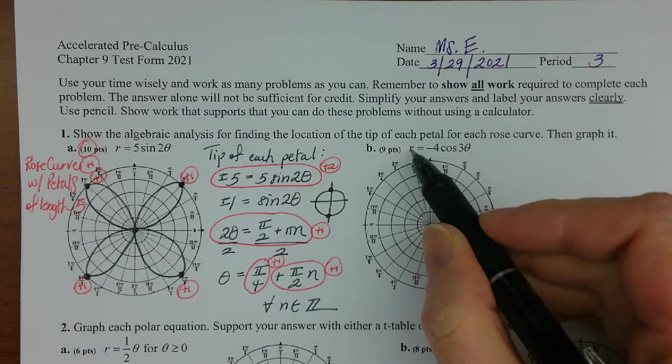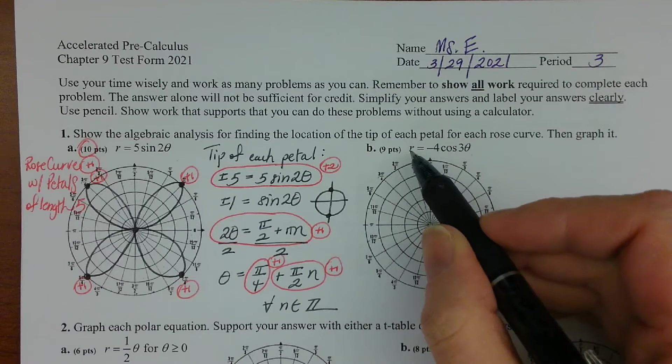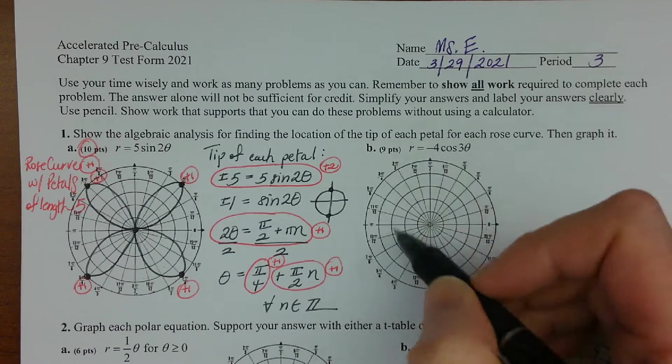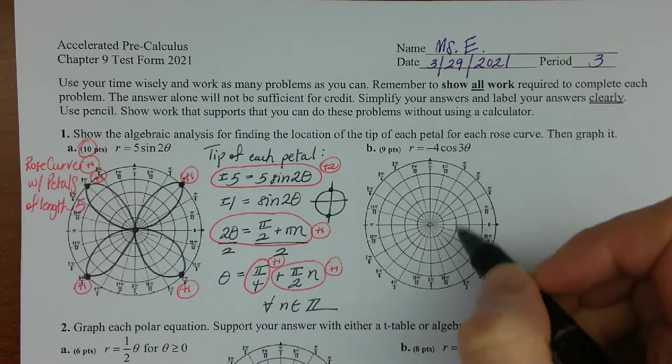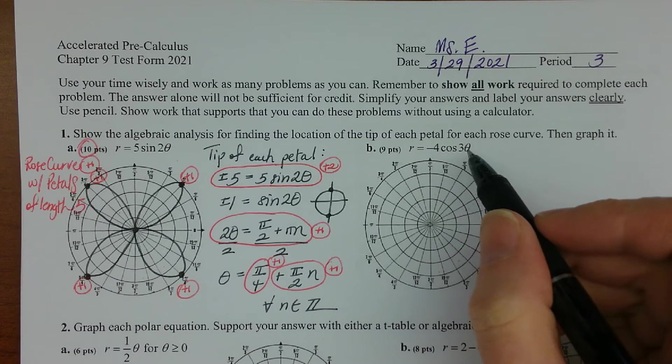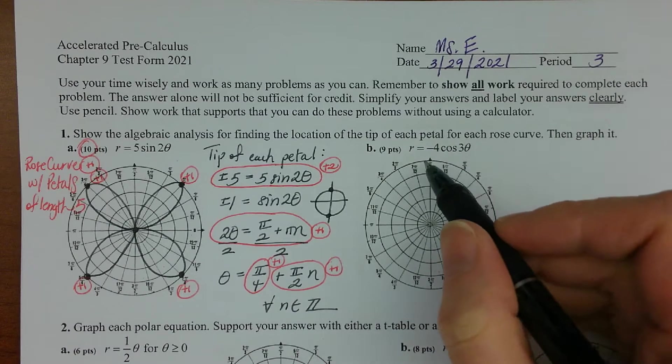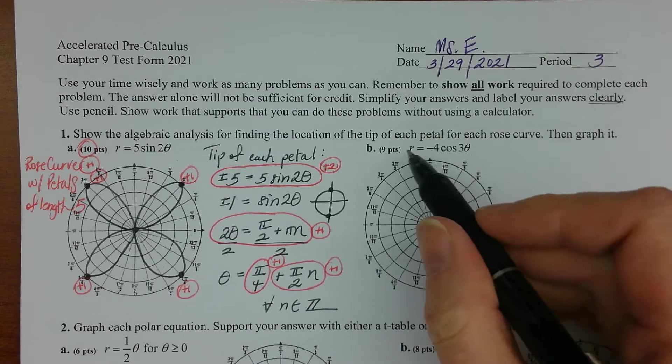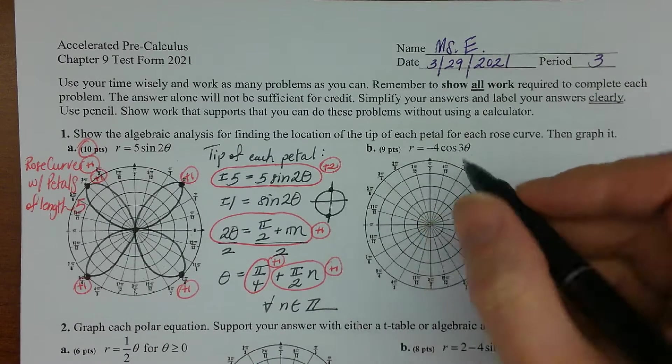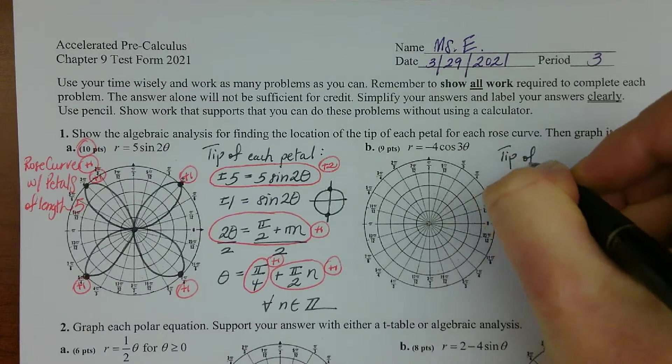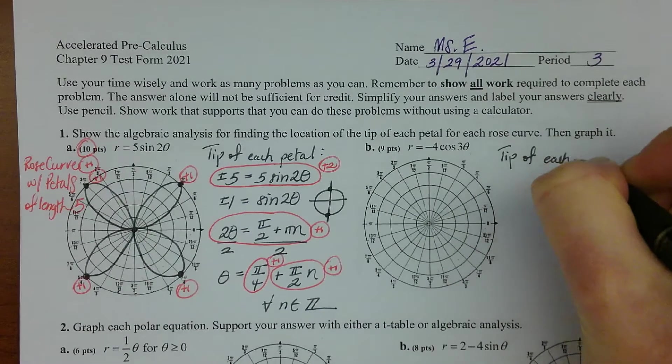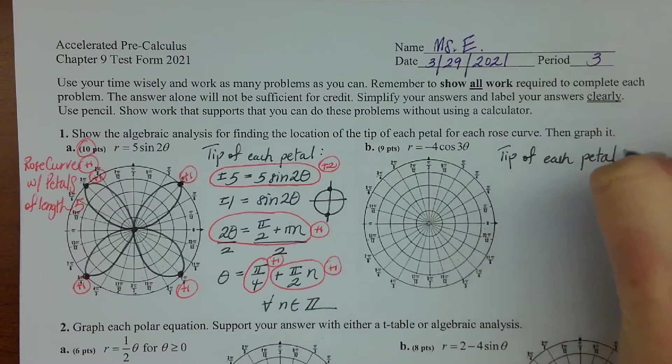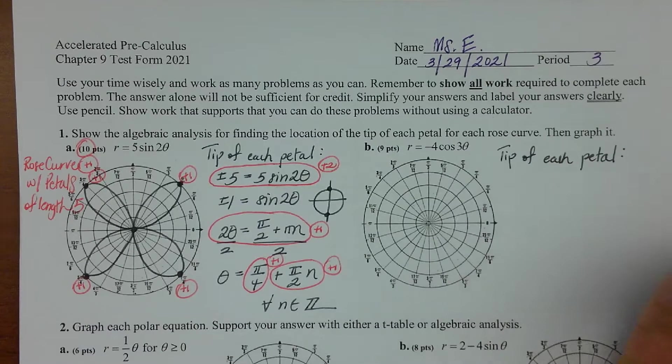Because you asked for when r would be positive four. Now if you set r equal to negative four you could get the same picture that I'm going to get, but you do it by taking the angles you get and going away from them for, because you asked for r to be negative four. So it's really just a matter of paying attention to what you asked for.